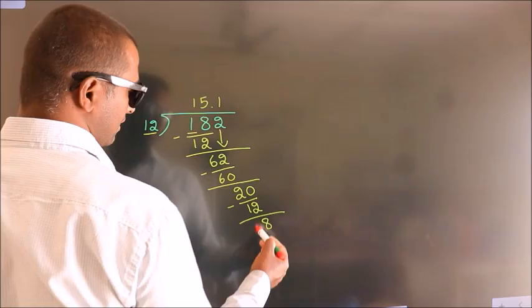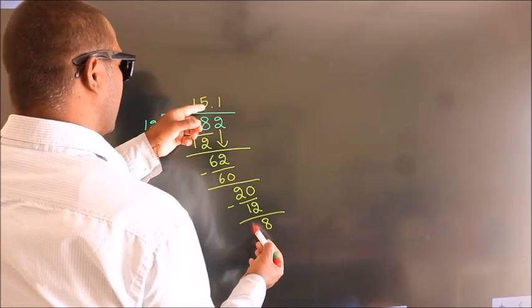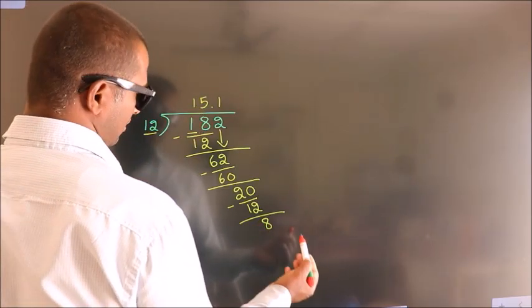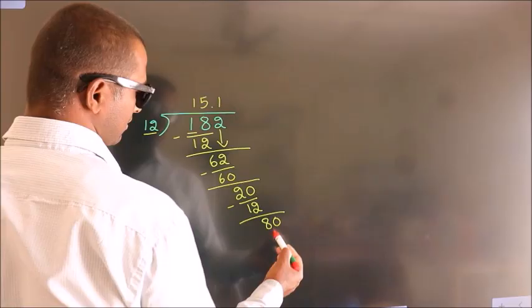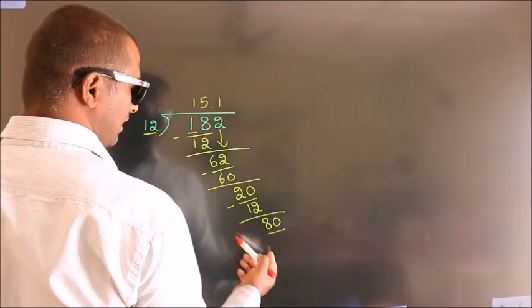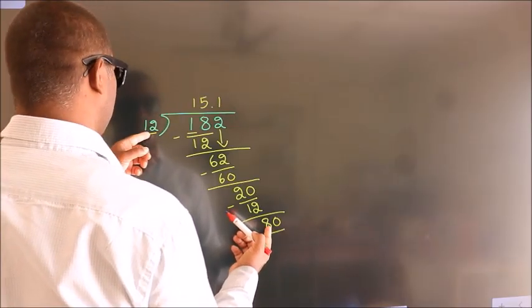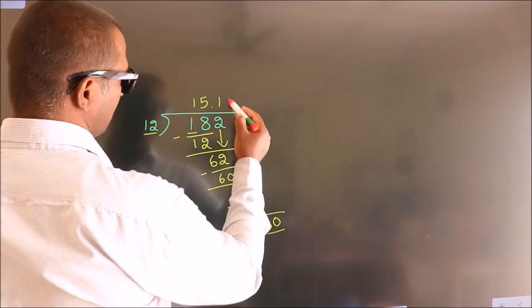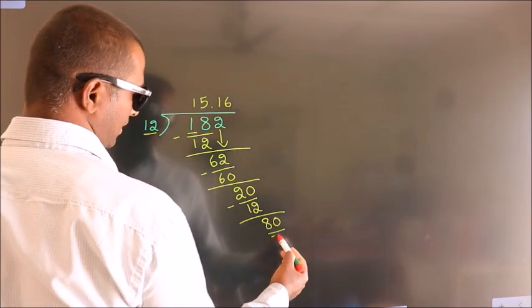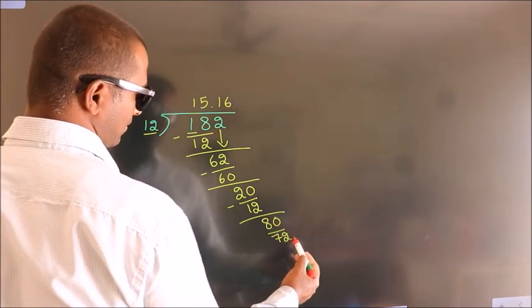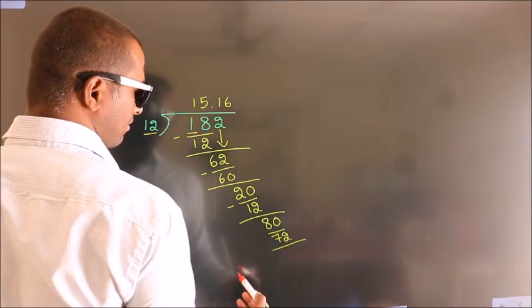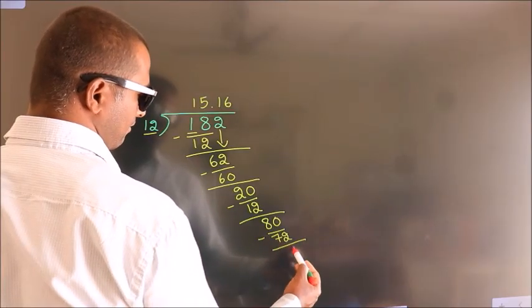After this, we already have the decimal, so directly take 0. So 80. A number close to 80 in the 12 table is 12 sixes, 72. Now we subtract. We get 8.